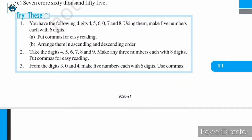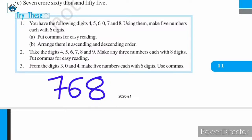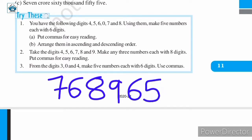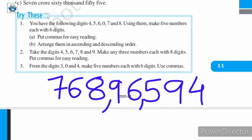Let us make one more number, beginning with seven: seven, six, eight, nine, six, five, nine, four. Here we have an eight-digit number which reads as seven crore, sixty-eight lakh, ninety-six thousand, five hundred ninety-four.